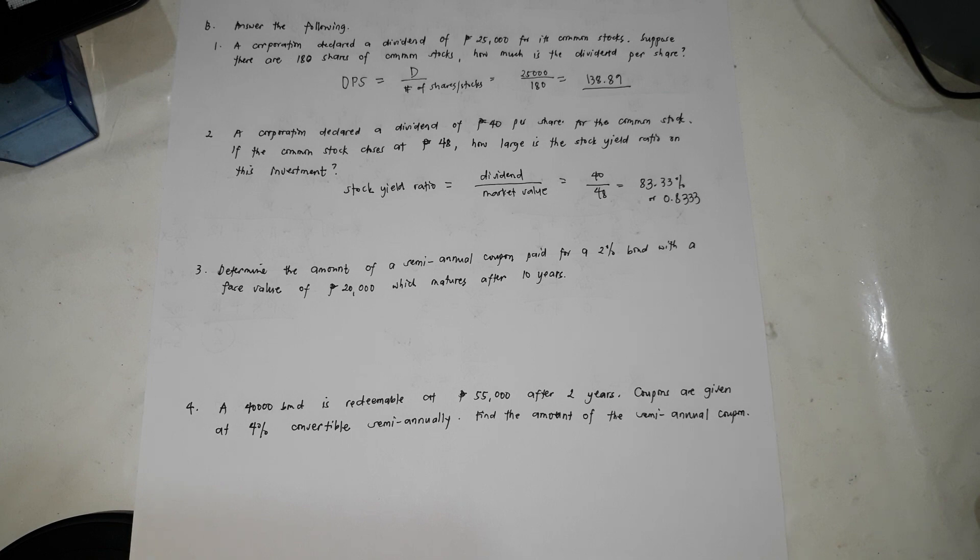So a semi-annual coupon is the amount that you're going to receive before you're going to receive the amount or the face value. So example, if the company owed you 10,000 and they promise that you're going to receive 20,000 at the end of five years. However, during semi-annually, you're going to receive a specific amount. So before you're going to receive the 20,000, they're going to pay you periodically. So probably example, 5,000 per six months. So that's the coupon.